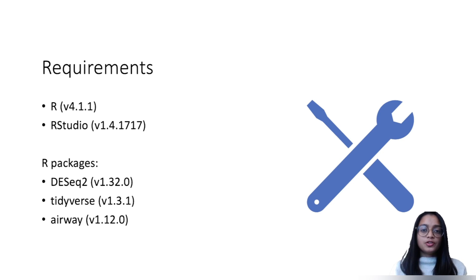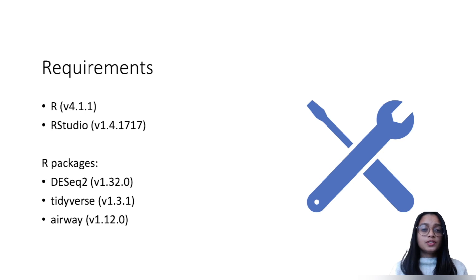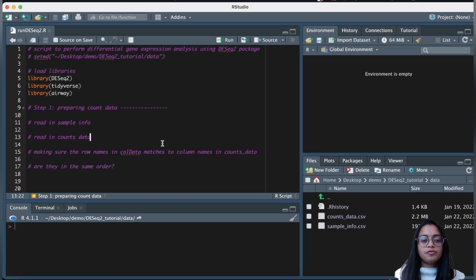Our requirements for today include three packages: DESeq2, tidyverse to manipulate the data, and the airway package, which is where we'll get our data from — it's a Bioconductor package. Now let's switch to RStudio and get started. This is going to be a fairly straightforward tutorial. All the steps I'm going to run today are already present in the DESeq2 vignette, and I'll add the link to that vignette in the description below.